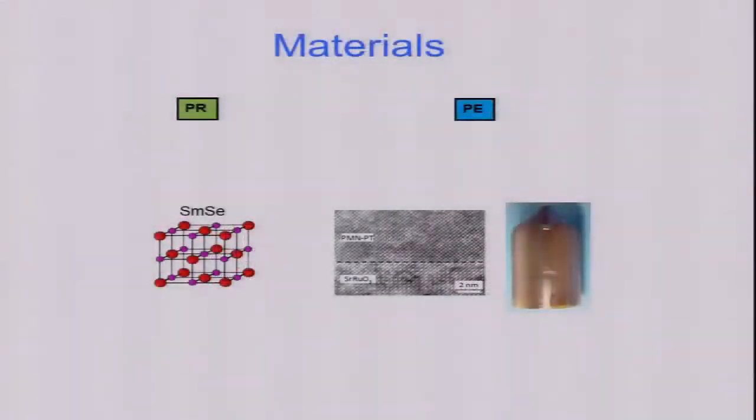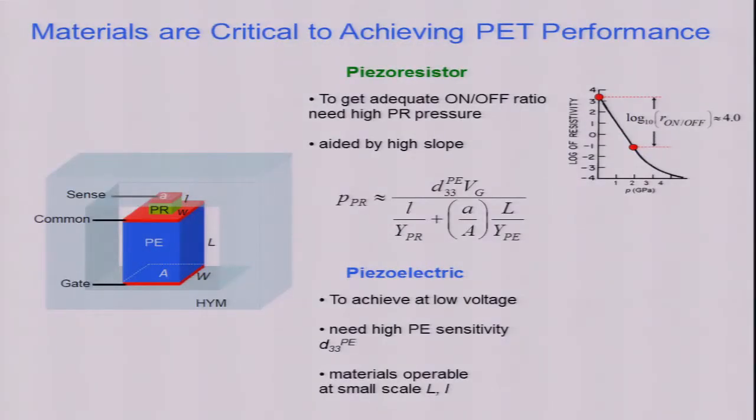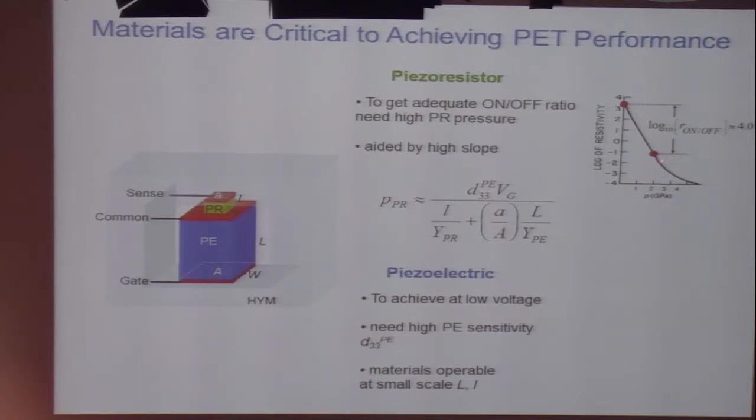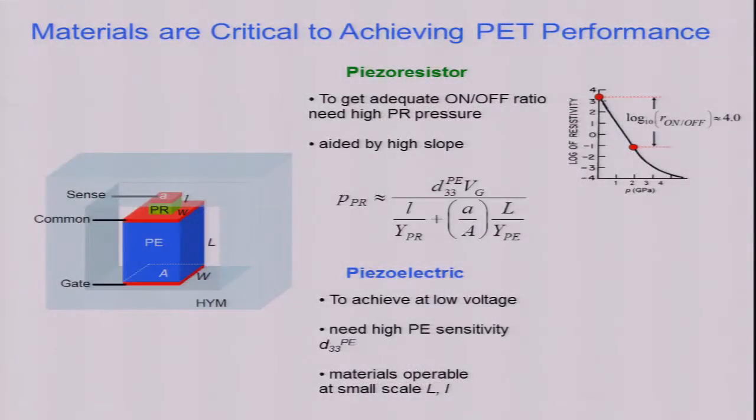Now the materials. These are key. The piezo resistor. Here is the log R versus pressure plot. Here are two conceivable operating points, at least for early experiments. To get adequate on-off ratio, you need high pressure. This will be much aided by a high slope here. This is a bit like the subthreshold slope in CMOS. You want this to be steep. And that's a materials thing. This is the simplest formula for the pressure in the piezo resistor. It depends on the D33 of the piezoelectric. The D33 is the expansion in distance per volt that the piezoelectric will give you.